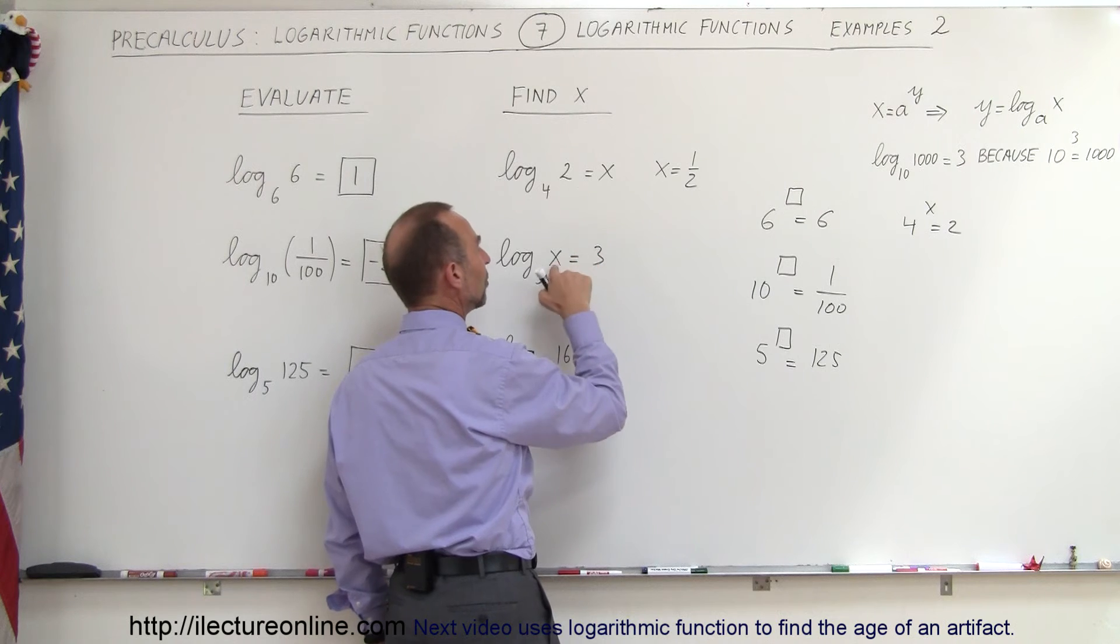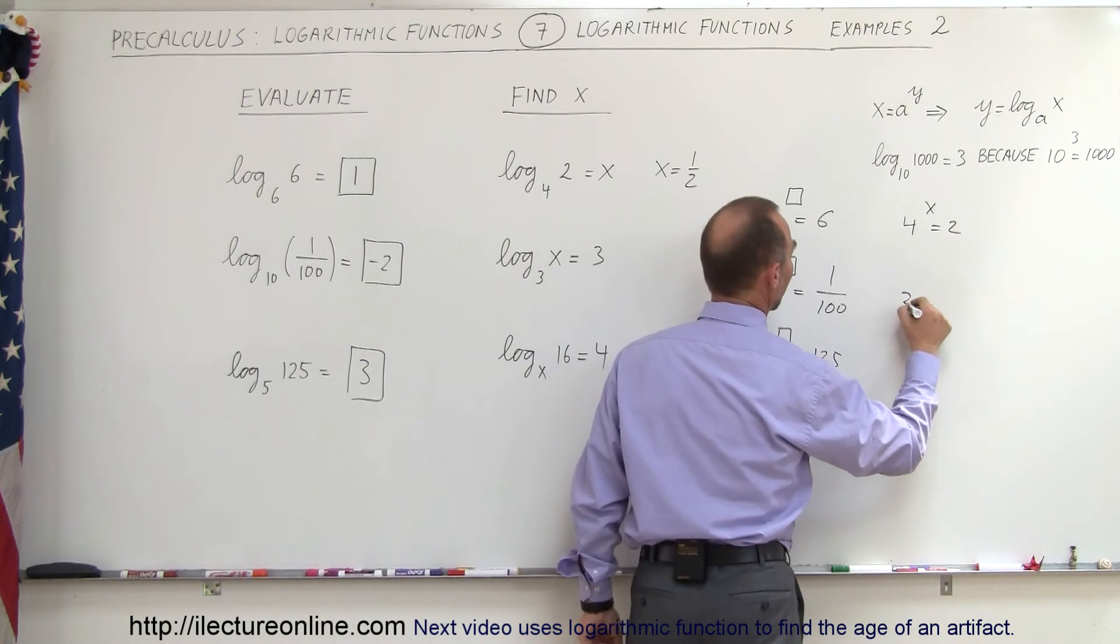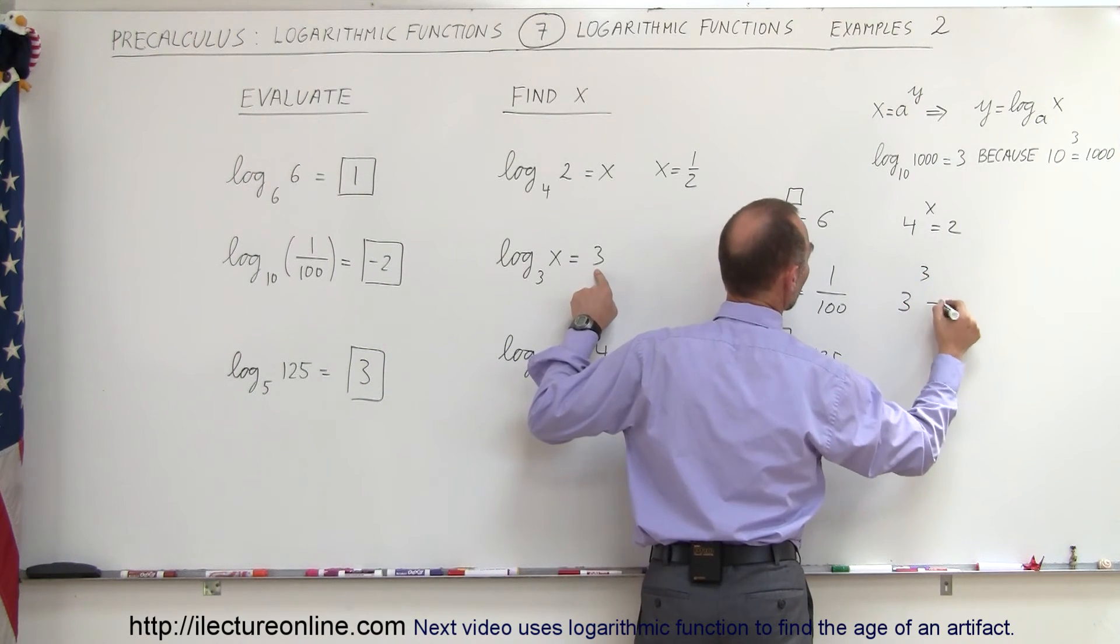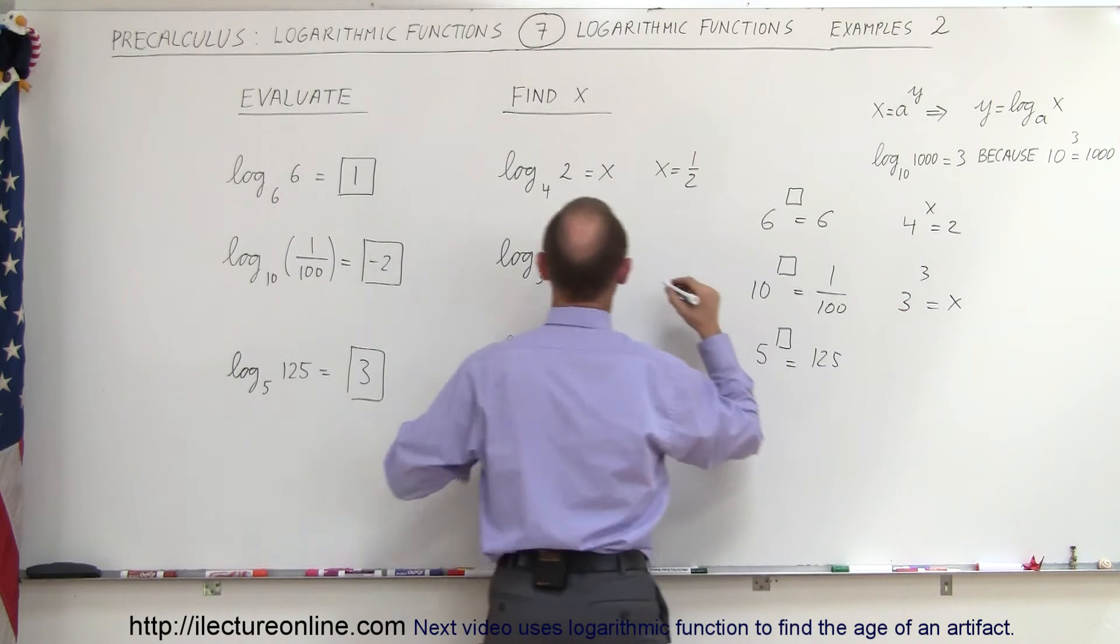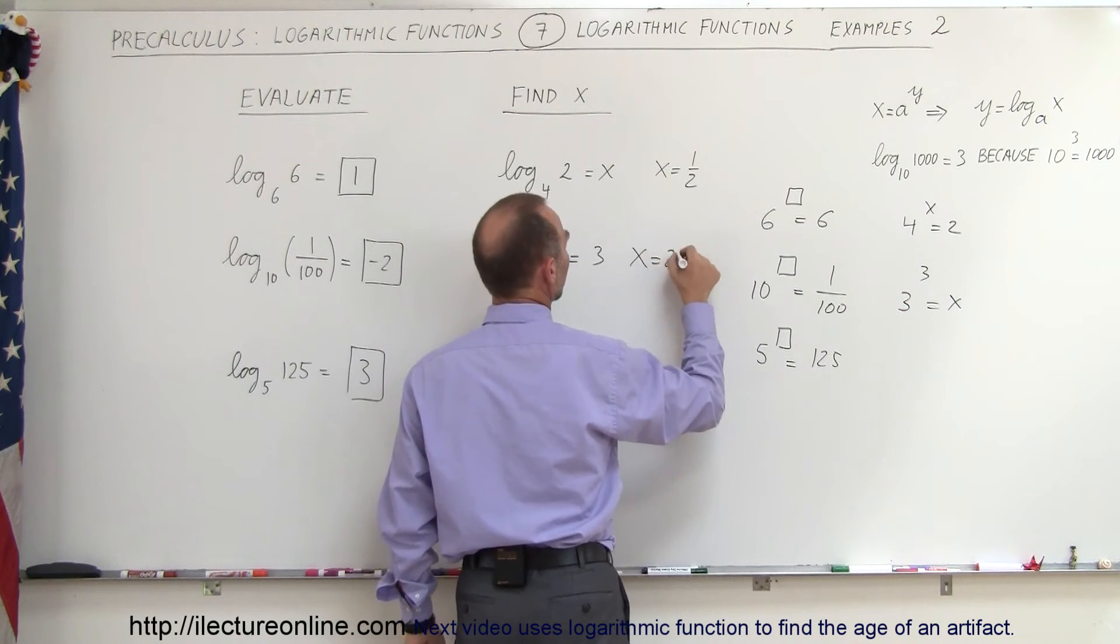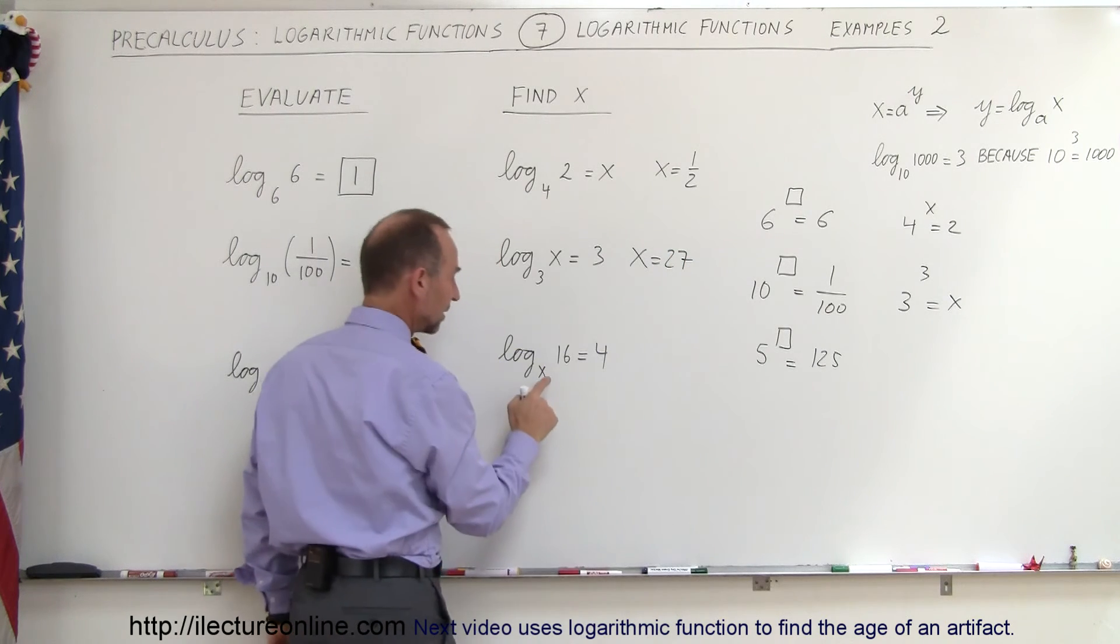Again over here, you take the base, raise to that number, you get x. So you take the base, raise to this number, you get x. Therefore x equals 3 cubed, which is 27. X is equal to 27.